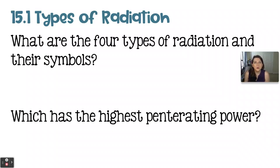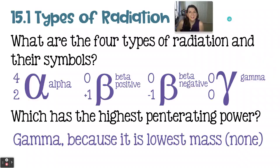You have two questions to answer here. The first is: what are the four types of radiation and their symbols? And then which of them has the highest penetrating power? There are four types of nuclear radiation: alpha, beta positive, beta negative, and gamma.